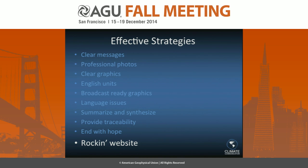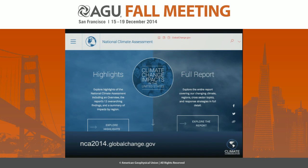Another thing that's really important in this age is you have got to have a great website. And we did — we had a great web development team at the technical support unit, and we also engaged a wonderful company called Habitat 7 in developing a website that did a really nice job. If you haven't been to it, I really suggest you go there: nca2014.globalchange.gov. It's a very up-to-the-minute website with lots of new technology, including the ability to use Facebook and Twitter to share any piece of this with people in your social network.